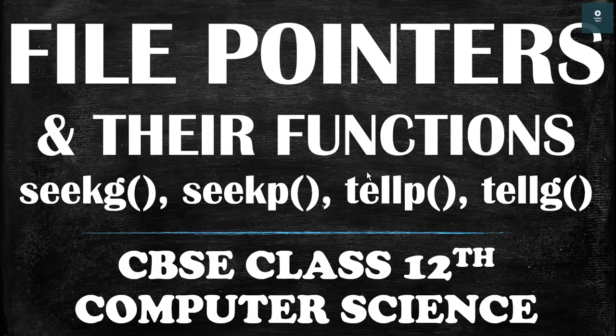We have two types of pointers. The first one is the get pointer and the second one is the put pointer. When we open a file in input mode we have a get pointer, and when we open a file in output mode we have a put pointer. So get is for input and put is for output.